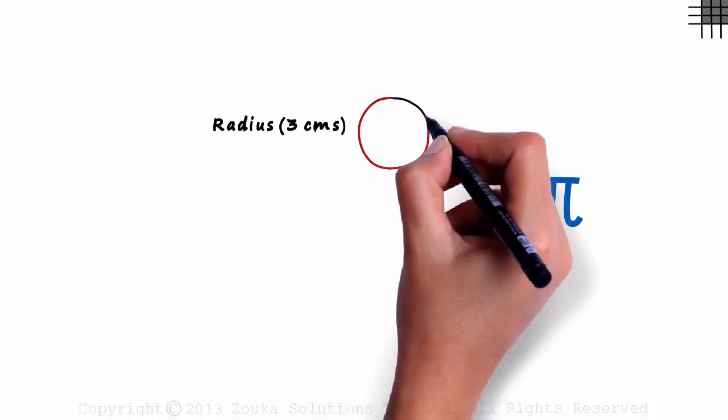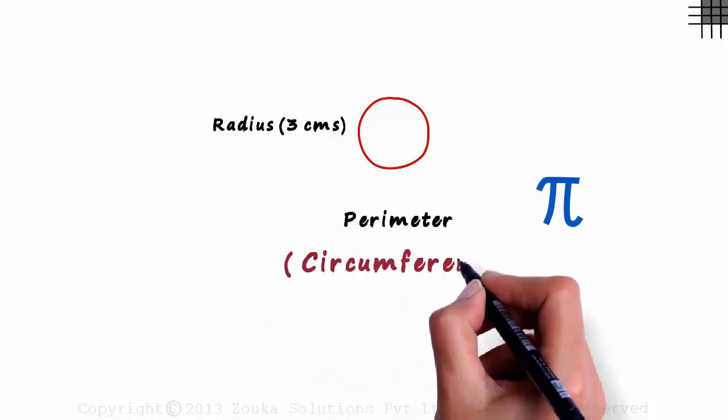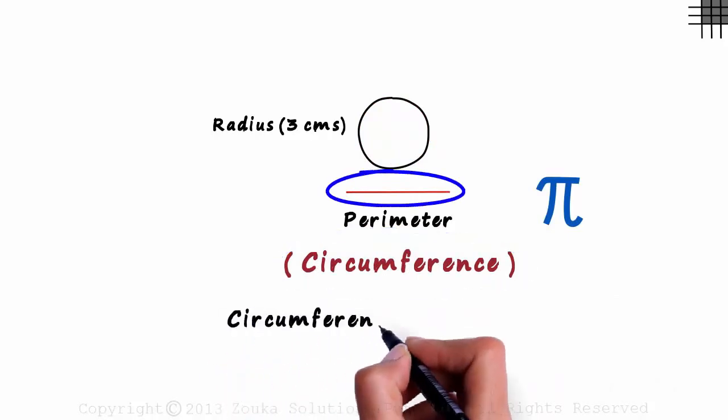The length of this red thing will be the perimeter. And we have a special name for the perimeter of a circle. It's called the circumference. This length will be the circumference. This length will measure 18.85 centimeters.